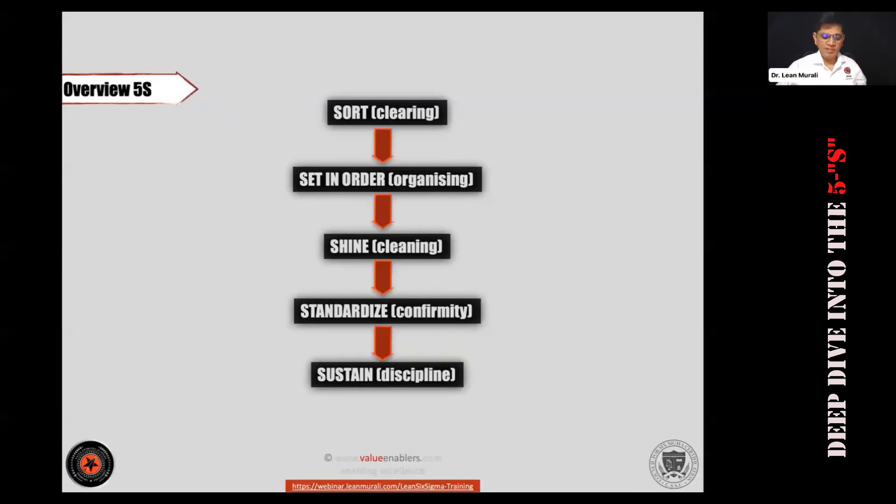This is very simple. Whenever there is a wardrobe that you have or a kitchen you have, please sort out. The first S is sort out what you need and what you don't need - what is necessary, what is not necessary. This is the first step. The second step is whatever is necessary, have a place for everything and put it in its place. All of you type PEEP in the chat box - place for everything, everything in its place. And the third S is shining which is spick and span, keep it neat and clean. And fourth S is standardization which means that you have to follow this 1S, 2S, 3S regularly and have a discipline to maintain high levels of workplace organization.